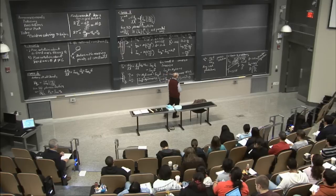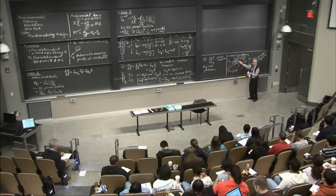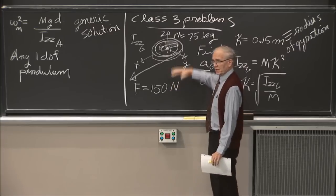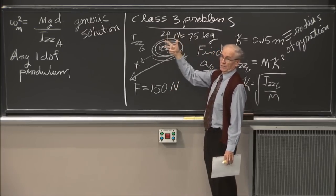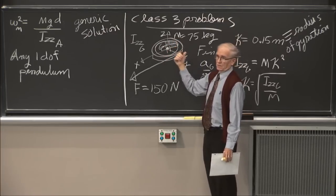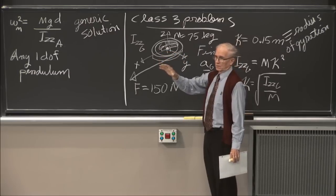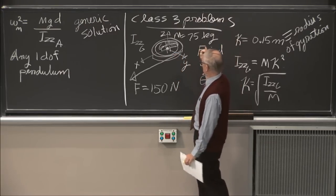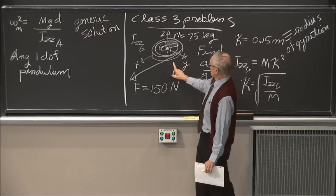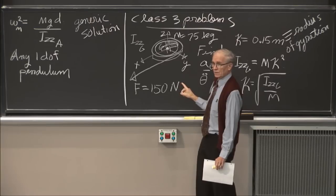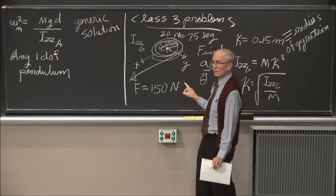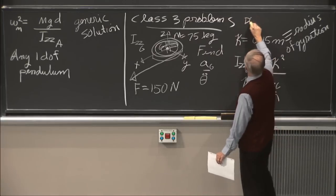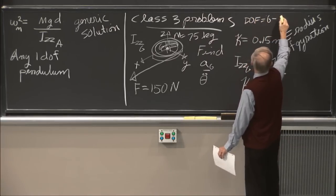How many degrees of freedom does this problem have? It's a 2D rigid body in planar motion — only allowed to rotate in z, not around x or y. So two rotational DOFs are removed, and z-translation is removed. That's 6 minus 3 constraints = 3 degrees of freedom. We need three equations of motion corresponding to x, y, and z-rotation.